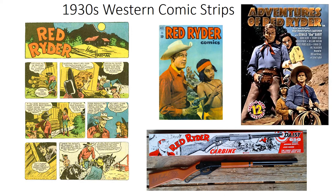Red Rider started off as a comic strip, and then they started making movies about Red Rider and his kid sidekick, Native American kid sidekick Little Beaver, who was played by Robert Blake — also a member of the Little Rascals, who then grew up to be Baretta, and later was part of a very sensational murder trial back in the 1990s. Comic books, of course, reflected the popularity of the movies more so than Red Rider as he appeared in the comic strips, and even attached the name Red Rider to the Daisy Company's BB guns.